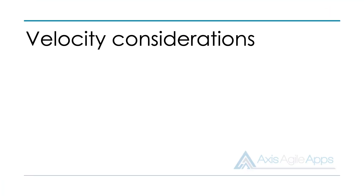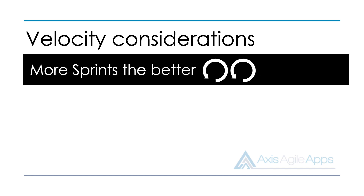When it comes to velocity, there are a few points to keep in mind. Firstly, the more sprints the team does, the more reliable that metric will be. If you're in the early days and just doing your initial sprints, you might find that the velocity isn't all that accurate. But don't worry — after your team gets through a few sprints, it will start to stabilize.